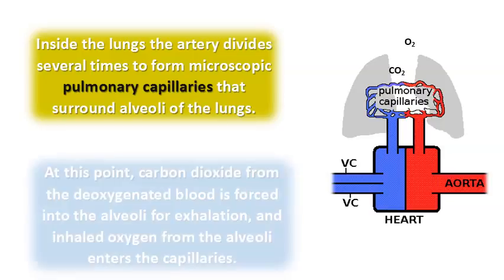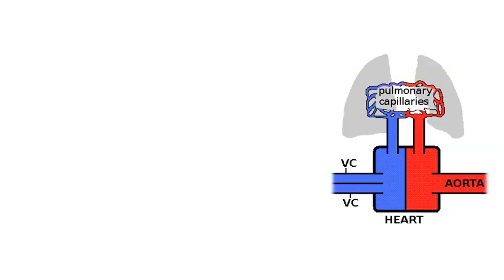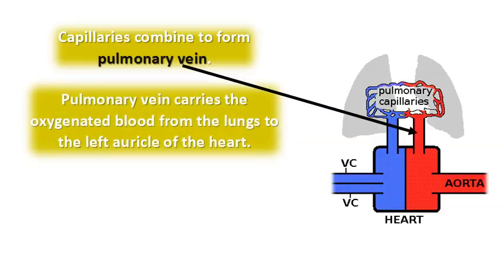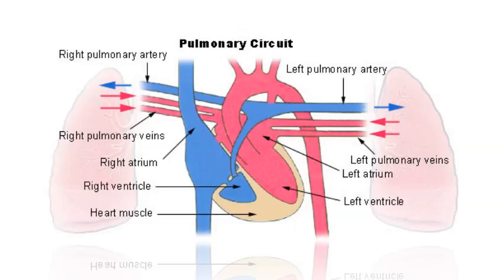Inside the lungs, the artery divides several times to form microscopic pulmonary capillaries that surround the alveoli of the lungs. At this point, carbon dioxide from the deoxygenated blood is forced into the alveoli for exhalation, and inhaled oxygen from the alveoli enters the capillaries. The capillaries combine to form the pulmonary vein, which carries oxygenated blood from the lungs to the left atricle of the heart, where it then enters the systemic circulation.